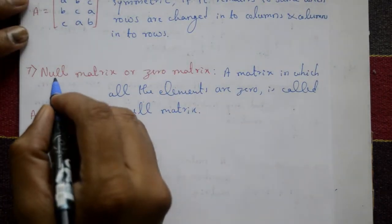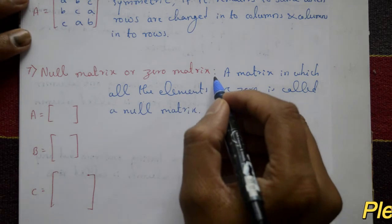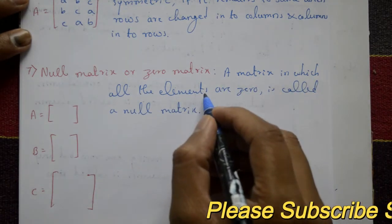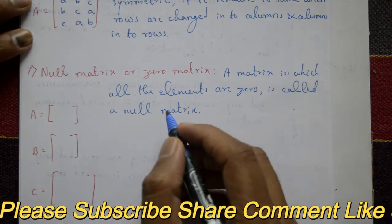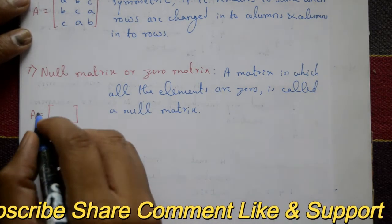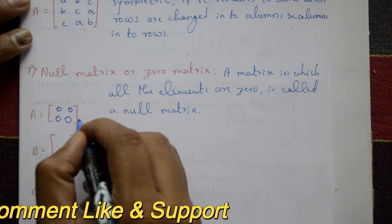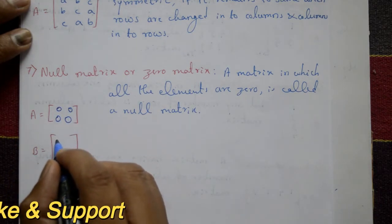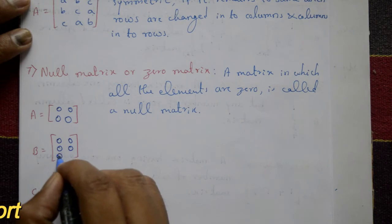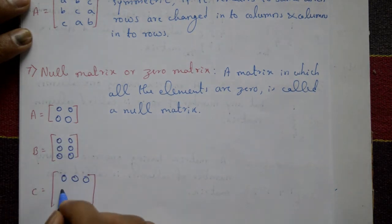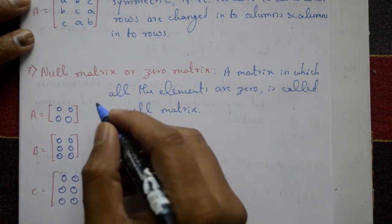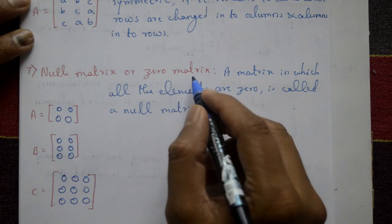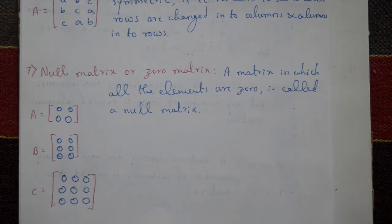Seventh type: null matrix or zero matrix. A matrix in which all the elements are zero is called a null matrix. Examples: first matrix has all elements zero; second matrix B has all six elements zero; third matrix also has all elements zero — and it is not necessarily a square matrix. As long as all elements are zero, it is called a null matrix or zero matrix.